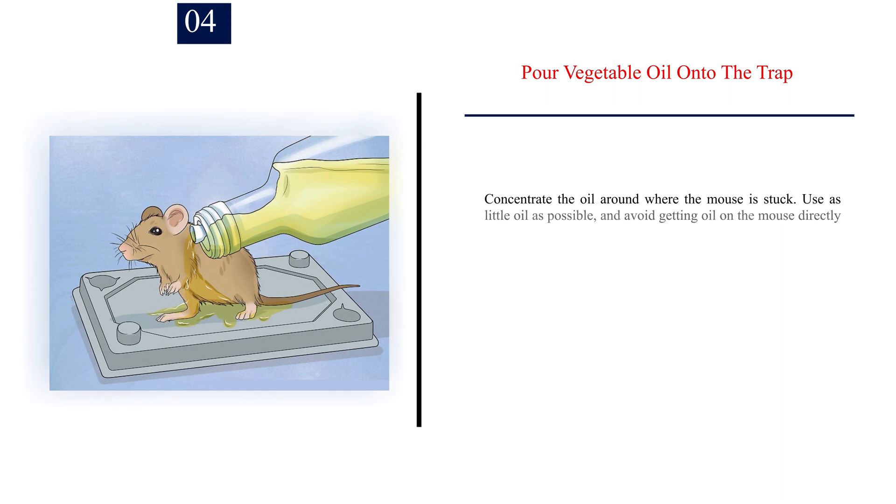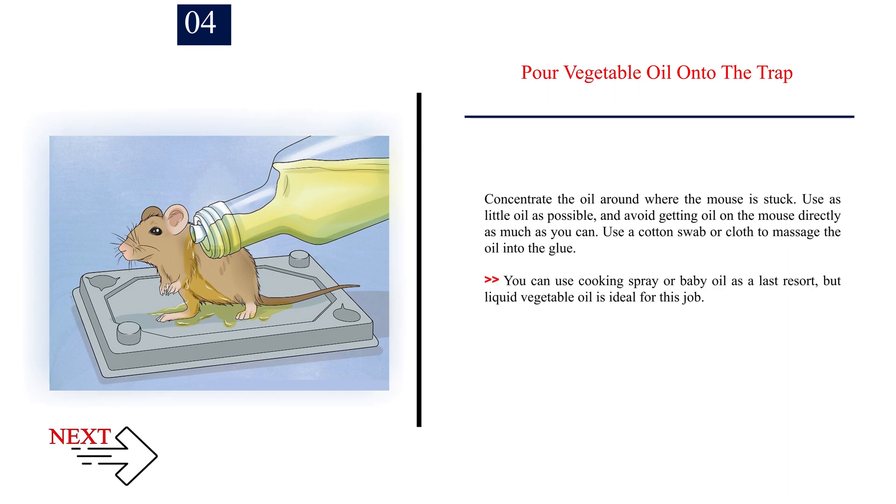Number 4: Pour vegetable oil onto the trap. Concentrate the oil around where the mouse is stuck. Use as little oil as possible, and avoid getting oil on the mouse directly as much as you can. Use a cotton swab or cloth to massage the oil into the glue. You can use cooking spray or baby oil as a last resort, but liquid vegetable oil is ideal for this job.